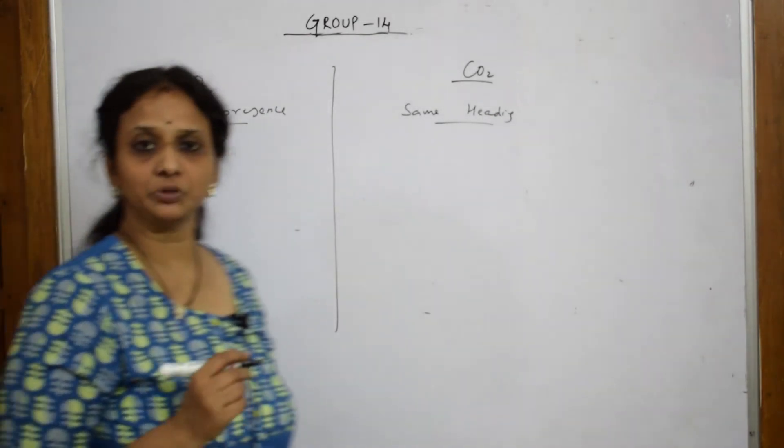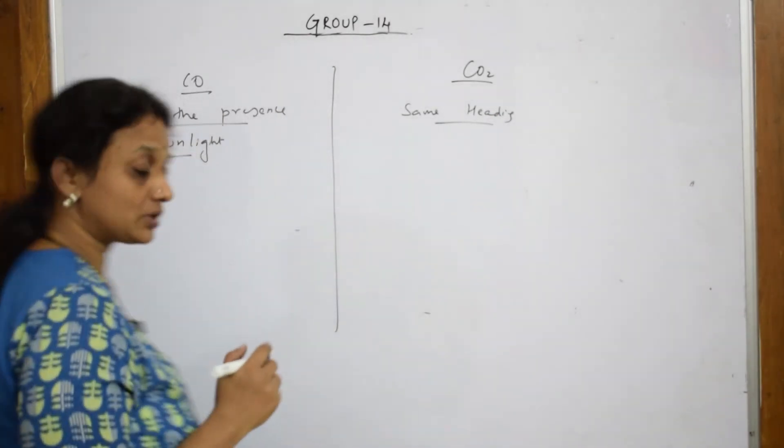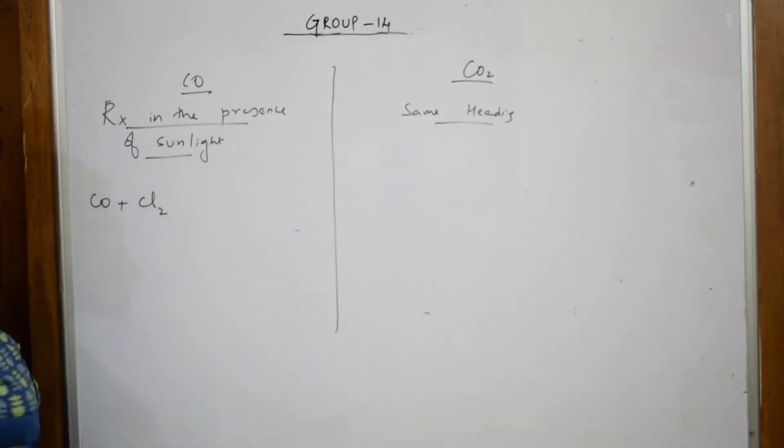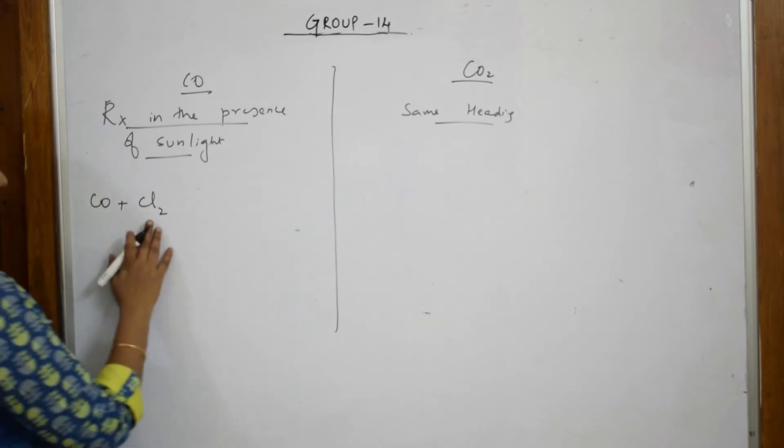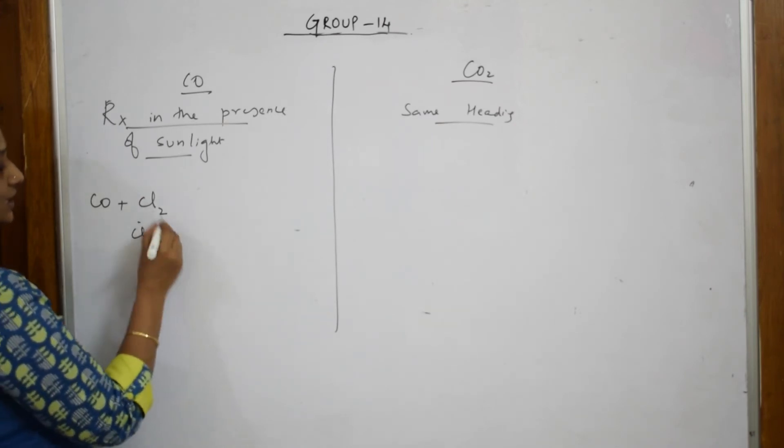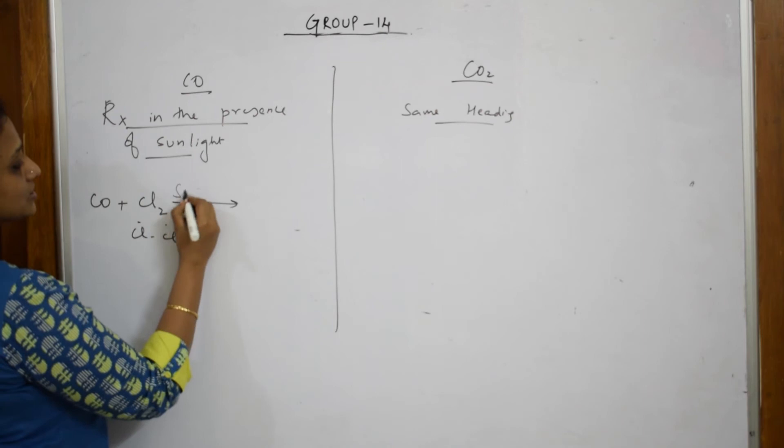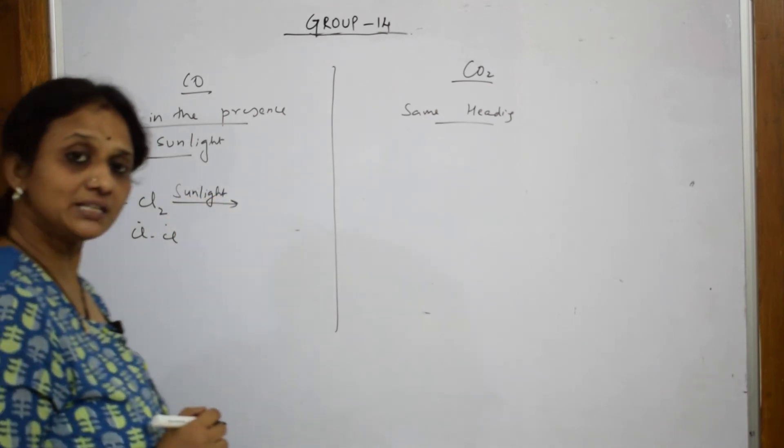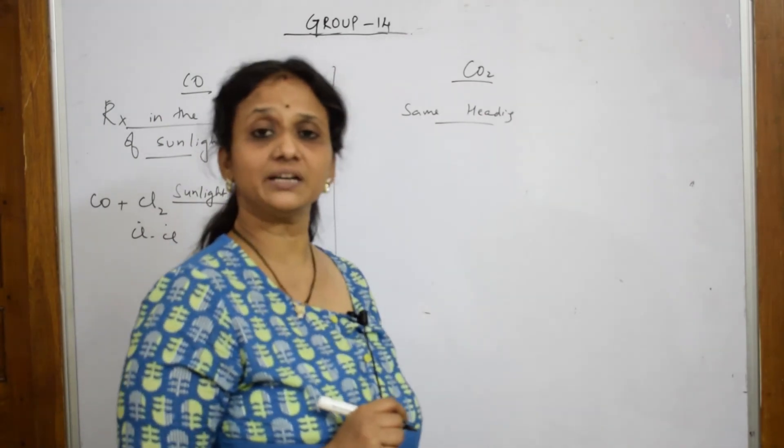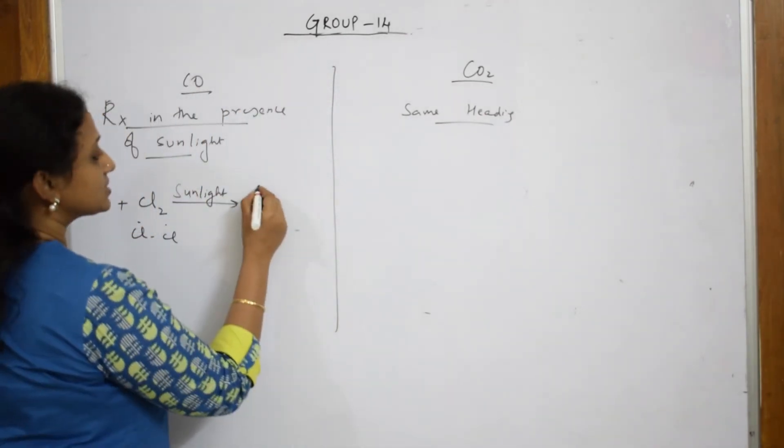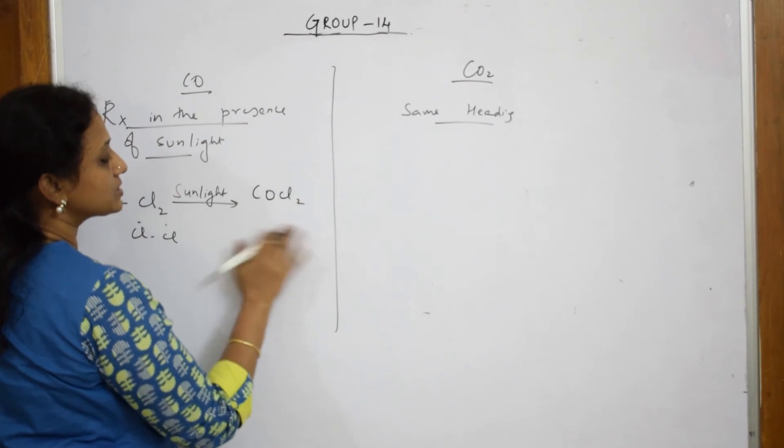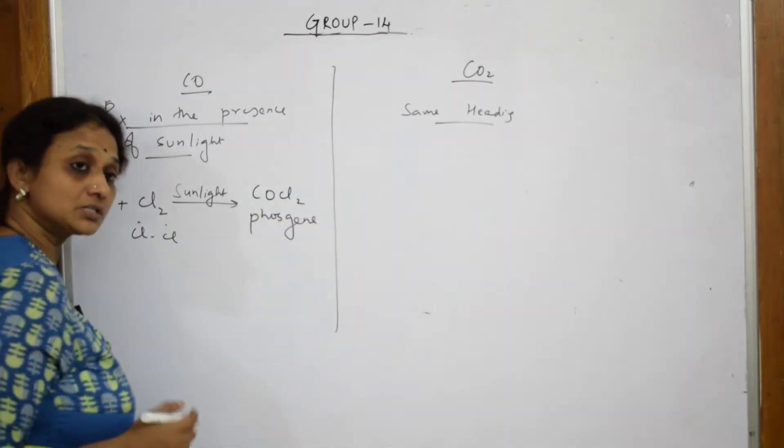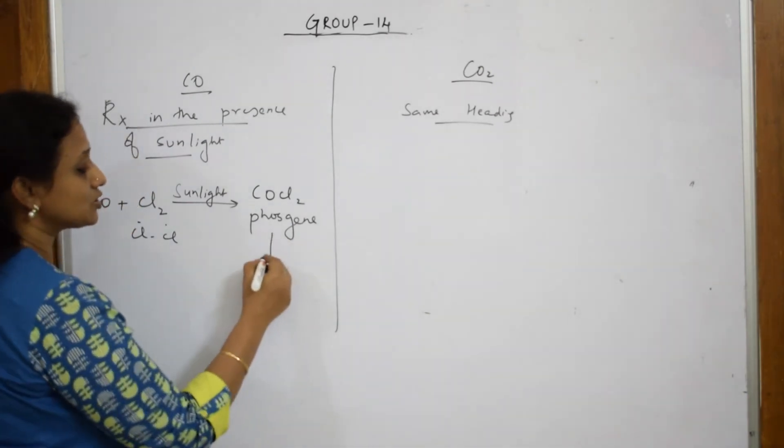When we are writing reactions in the presence of sunlight, observe carefully. You have carbon monoxide, I said it is poisonous, toxic in nature. Carbon monoxide will combine with chlorine present in the atmosphere which exists as free radicals, Cl and Cl. This reaction occurs in the presence of sunlight and when it combines with chlorine atom, it forms a compound called phosgene, that is COCl₂.